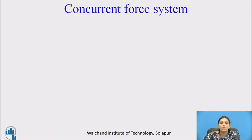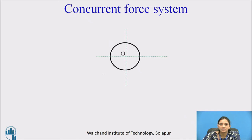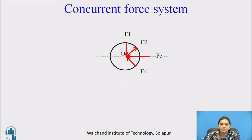We will see now concurrent force system. Here there is a body on which several forces are acting — F1, F2, F3, and F4 — all acting at point O, meaning all the forces are meeting at point O. Their meeting point is the same, so the force system is called the concurrent force system.